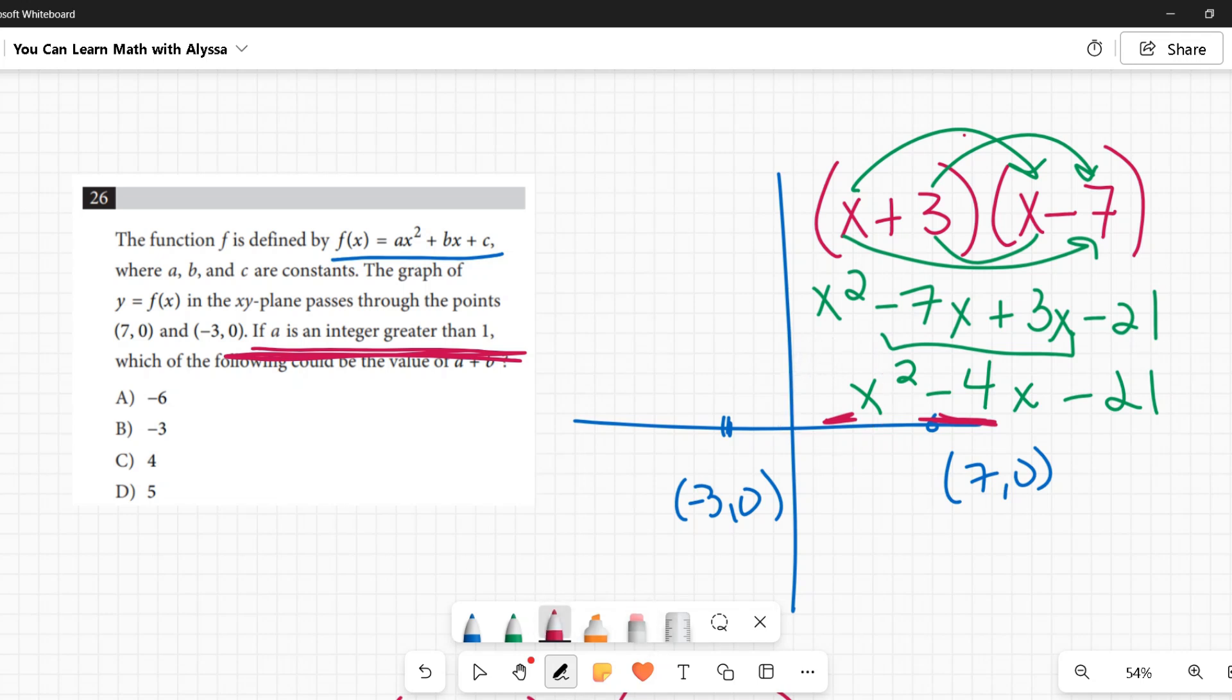So what's an integer greater than 1? What's the next one up? That'd be 2. So to change this to 2, I need to multiply this whole thing by 2, which would give me 2x² - 8x - 42. Then when I add a and b: 2 + (-8) would be -6.